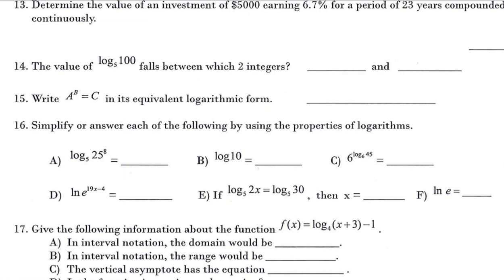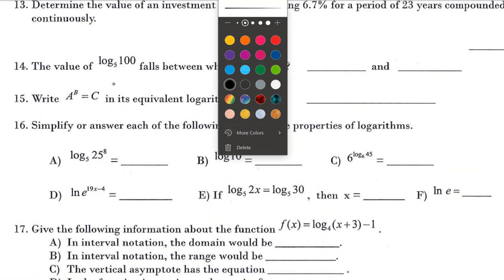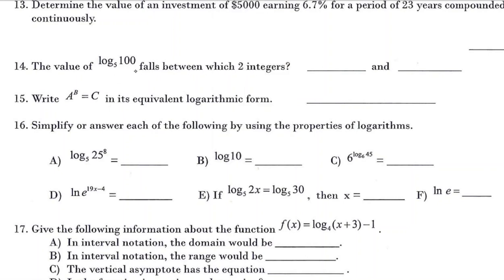Okay, so number 14: the value of log base 5 of 100 falls between which two integers? To get a decimal approximation, we could do this in our calculator. Since you're going to have a calculator in the final, you could type that in if you remember change of base or how to type it in. That's going to show you, so if it's like 2.3, that would mean it's between 2 and 3.